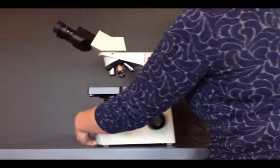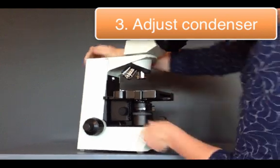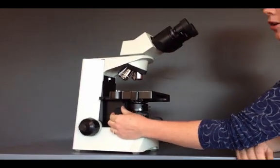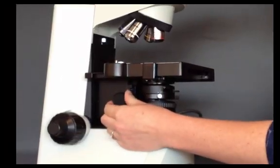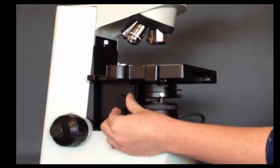Then you need to look at the other side of your microscope at the condenser knob right here. You need to make sure that the condenser is all the way up and then slightly backed off just a hair.